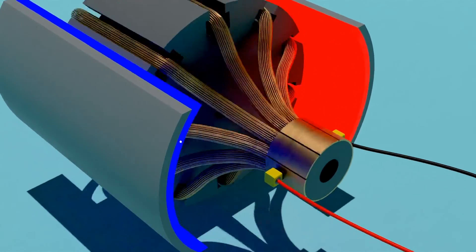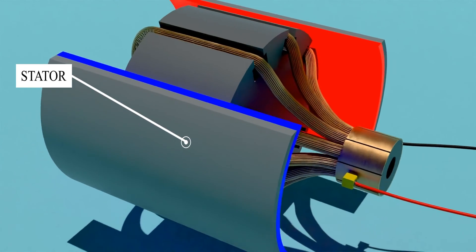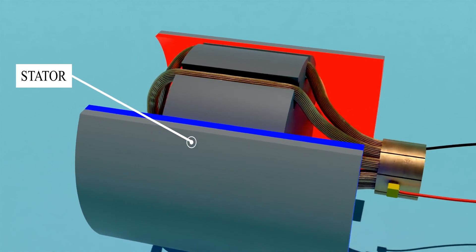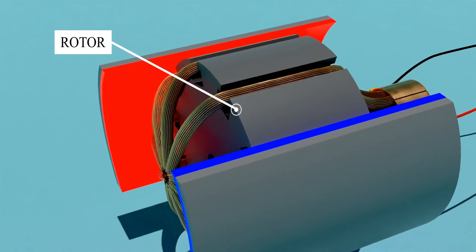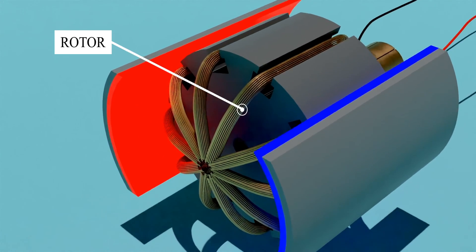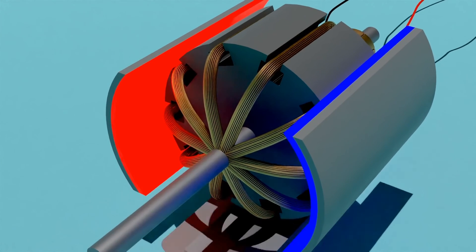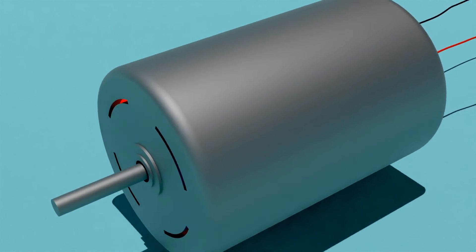The part that doesn't move is called the stator. In this case, it's the two permanent magnets on the side. The armature in the middle is also called a rotor, and this is the part that spins. The axle goes through the middle of the rotor and then sticks out the back of the motor.